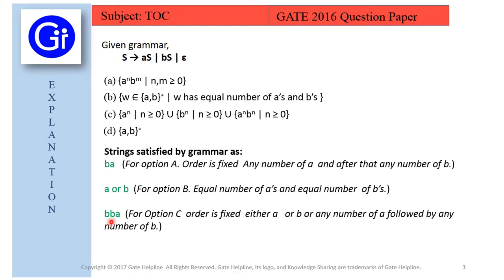Now we will see our third string: 'bba'. We generate it as: S → bS, then S → bS, giving two b's, then S → aS, then S → ε, producing 'bba'. But for option C, the order is fixed — either any number of a's, or any number of b's, or any number of a's followed by any number of b's. Since a's and b's are in fixed order and a's must be followed by b's, option C cannot generate 'bba'. Therefore option C is also eliminated.